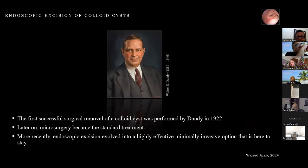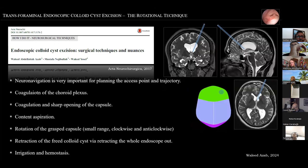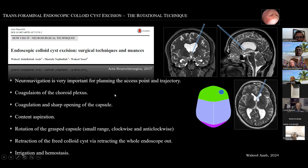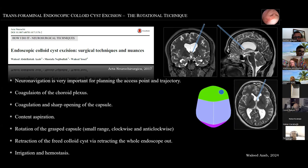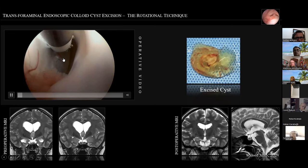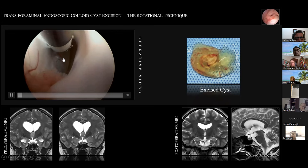The key surgical steps for endoscopic colloid cyst resection by the transforaminal rotational technique are: neuronavigation is very important; coagulation of the choroid plexus; opening the capsule and aspirating and decompressing its content; then grasping the capsule and rotating it in small clockwise and anti-clockwise movements until it dislocates from its attachment; and then taking the whole thing out — the colloid cyst and the grasping forceps — outside the field, followed by irrigation and hemostasis.